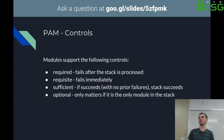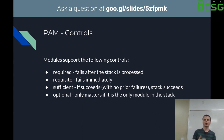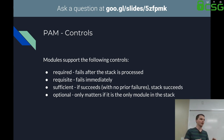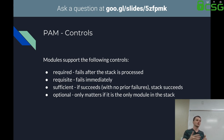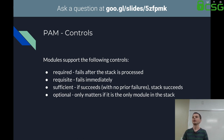The controls again: 'required' — if it fails, the entire stack is processed and it kicks you out. 'Requisite' fails immediately. There is debate on what you should use, largely because an attacker could reasonably gain information about your authentication stack if you're using requisite. If you have a check that requires something like your UID to be a certain number and that's a requisite, you can brute force that check because it'll kick you out sooner than other checks.